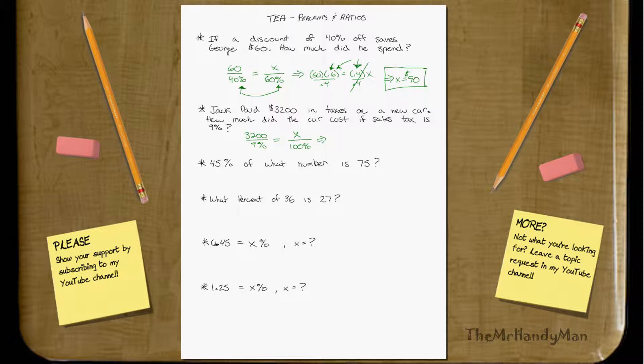All you do is cross-multiply. $3,200 times 100% equals 9% times x. You divide that 9% over and solve for x. X will equal 35,555.56. Expensive car.